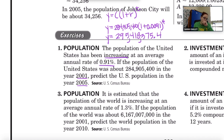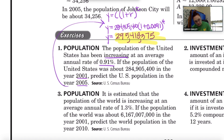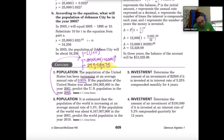You can't have four-tenths of a person, so I'll round that to the nearest whole number. That gives a predicted U.S. population in 2005 of 295,418,375. That's number one.